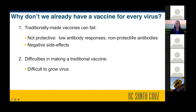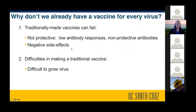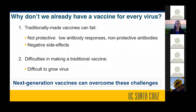Often people ask me, why don't we already have a vaccine for every virus? Why don't we just grow it up and inactivate it? There can be a variety of reasons, but most commonly, traditionally made vaccines can fail either preclinically or in the clinic. One possibility is that a traditionally made vaccine doesn't actually induce protection — you might get a low antibody response, or antibodies that don't protect from disease. There can also be negative side effects. Another problem is that it can be difficult to grow some viruses in the lab. Next-generation vaccines can overcome some of these challenges.